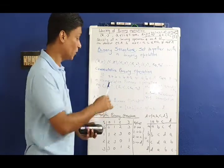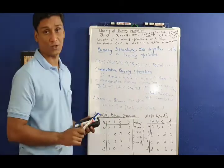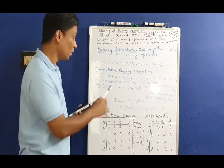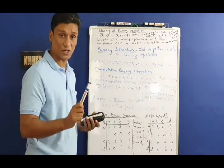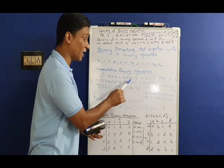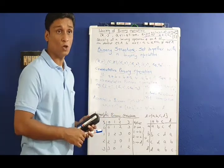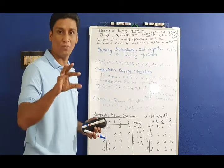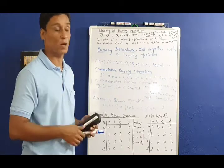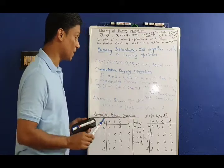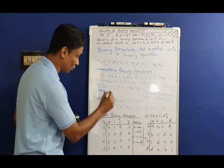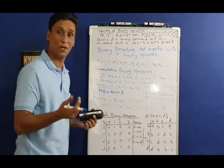Now comes the third definition: commutative binary operation. A binary operation star on set A is said to be commutative if a star b equals b star a for all a, b in A. For example, under real number addition, 1 plus 2 equals 2 plus 1 equals 3, so addition is commutative.